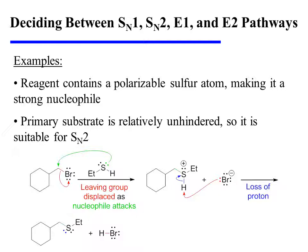In the specific example shown below, the reagent contains a polarizable sulfur atom, making it a strong nucleophile. The substrate is primary and therefore reasonably unhindered, even though there is some nearby branching, so it is suitable for SN2. In this case, the sulfur is going to actively displace bromide as a leaving group, and the cation that results loses a proton to form the neutral thioether product.